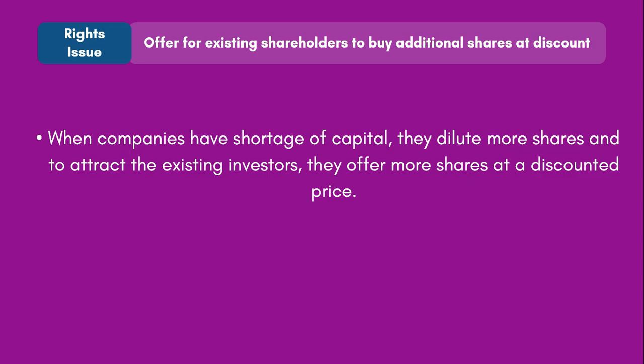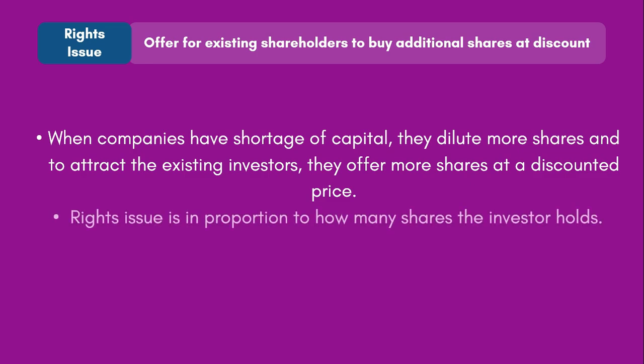The rights issue is in proportion to how many shares the investor holds. For example, if you are holding only one share, in a rights issue you cannot buy a hundred or a thousand shares. There will always be a proportion depending on how many shares you already hold. For example, if the rights issue is in a ratio of 1:1, then for every 10 shares you have, you can buy only 10 new shares.